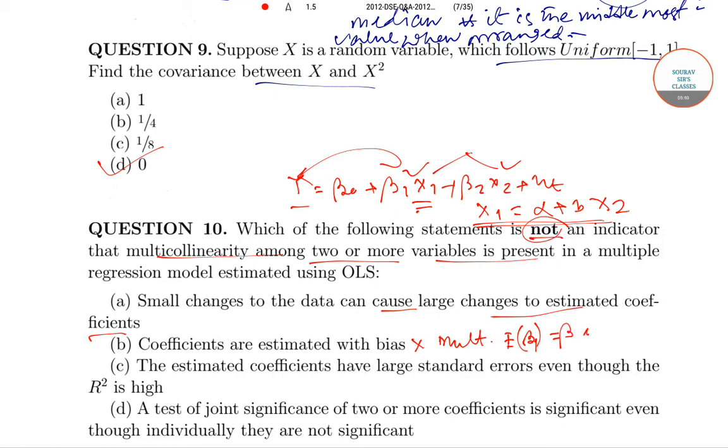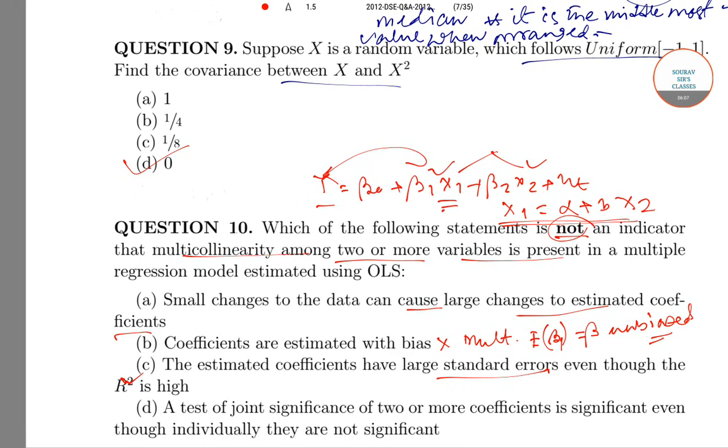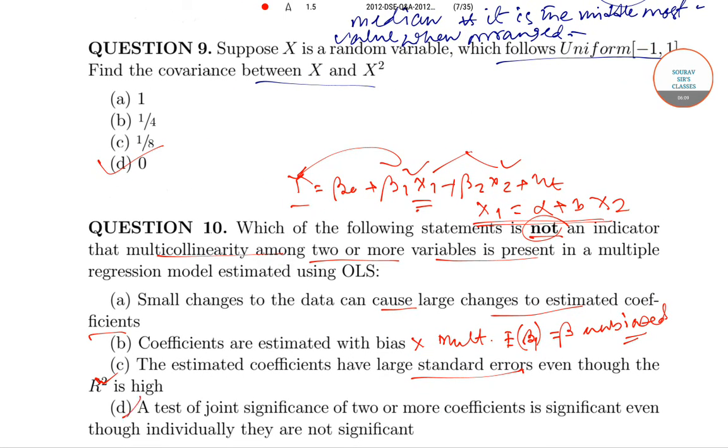The problem is actually with variance. The estimated coefficients have large standard errors even though R² is high - which is true. And the test of joint significance of two or more coefficients is significant though individually they are not - this is also true. Therefore, the case which is not an indicator of multicollinearity is option B. So this is the correct answer.